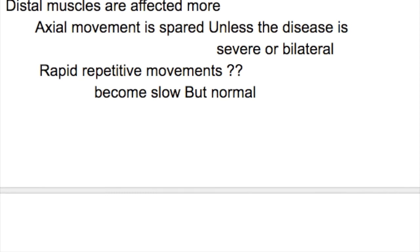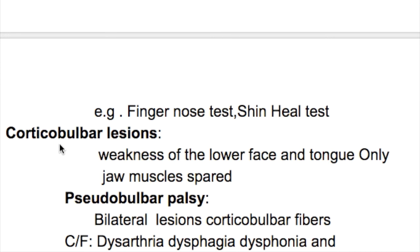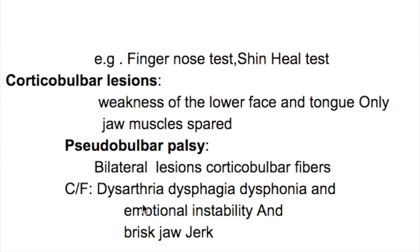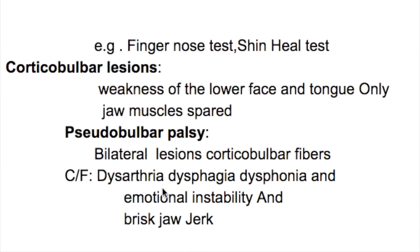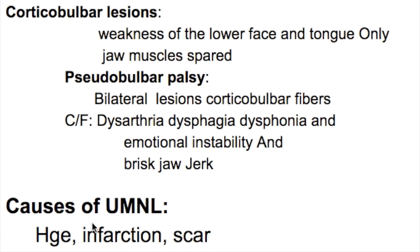Rapid repetitive movements become slow but remain relatively normal — examples are the finger-nose test and the shin-knee test. Corticobulbar lesions produce weakness of the lower face and tongue only; the jaw muscles are spared. Bilateral lesions of the corticobulbar fibers produce pseudobulbar palsy, with clinical features of dysarthria, dysphagia, dysphonia, and emotional instability. The patient may start laughing and crying uncontrollably, known as pseudobulbar affect.